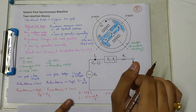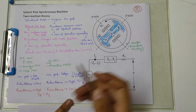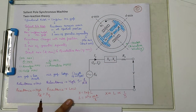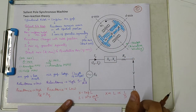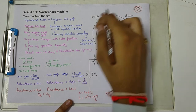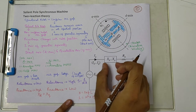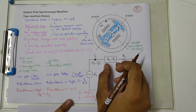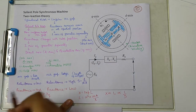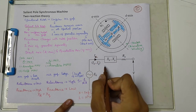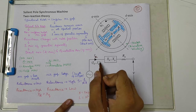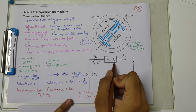This is the basis of two-reaction theory: we divide the reactance into two parts — direct axis reactance XD and quadrature axis reactance XQ — and the values of both are different. In the equivalent circuit, E0 is the no-load induced EMF in the armature winding and V is the terminal voltage. The synchronous reactance is divided into XD and XQ, and the armature current IA is assumed to have two components: a direct axis current ID and a quadrature axis current IQ, corresponding to XD and XQ respectively.